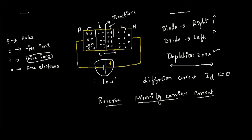Even if you apply a low voltage from the battery, the current created will also be very very low and it will reach the saturation point very soon. The saturation point means that once something reaches it, it will not go further — it will stay wherever it is.